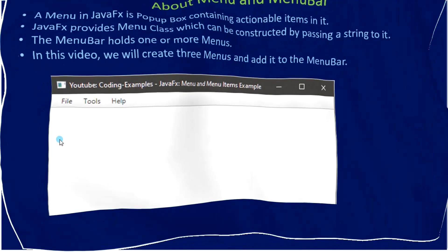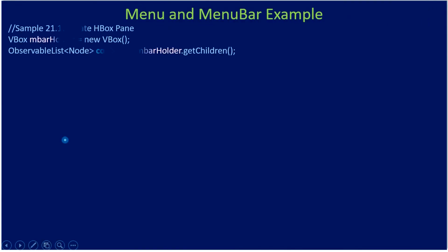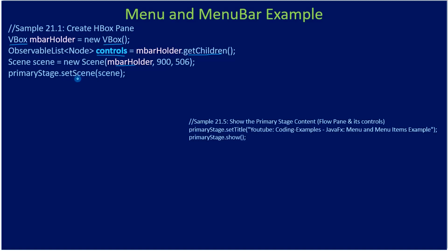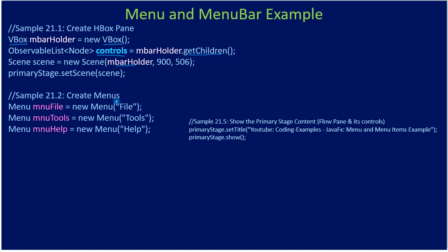We are creating a VBox (vertical box) to hold the menu bar. From the VBox we retrieve the children collection, which we name 'controls'. Then we create a scene and pass the VBox to it. Through the primary stage we display the scene, setting the window title and showing the stage. Note that the menu bar is not yet created at this point — only the VBox has been assembled with the scene.